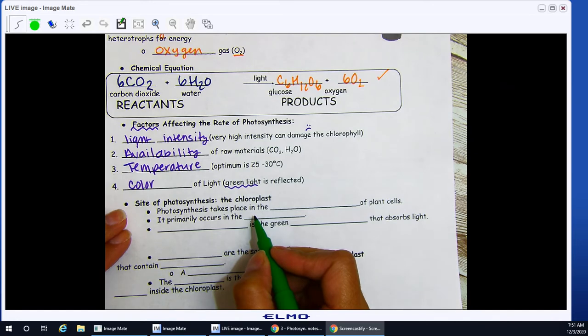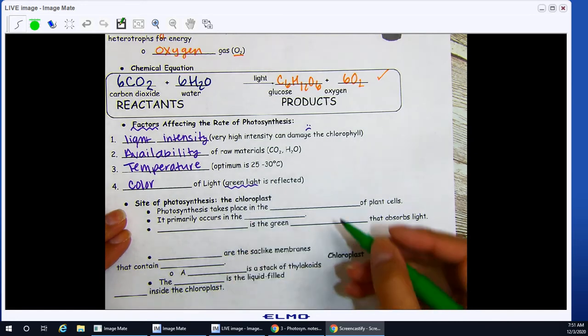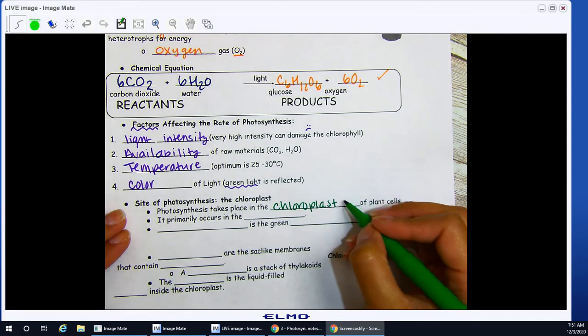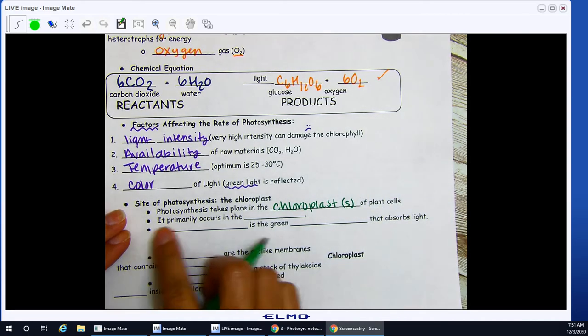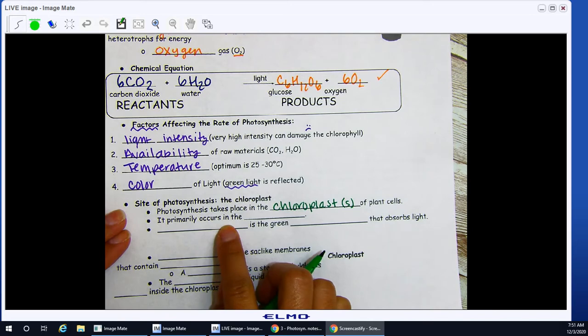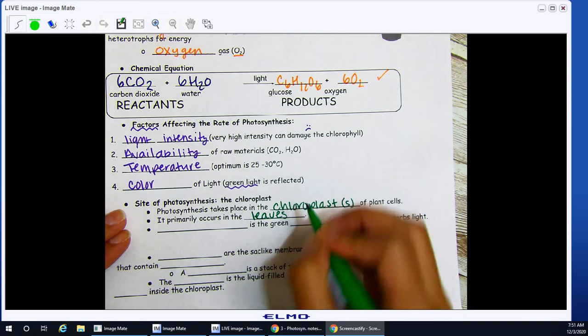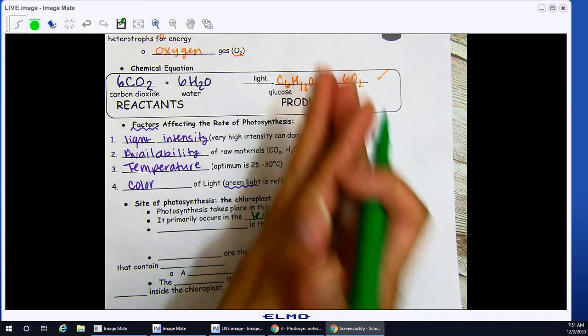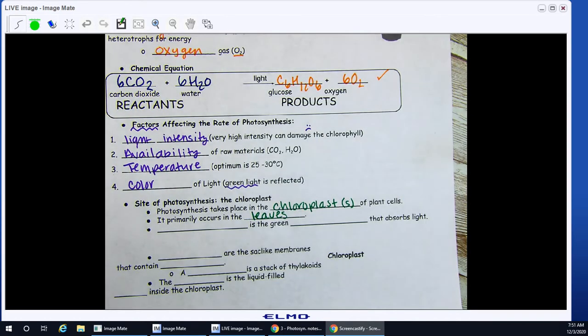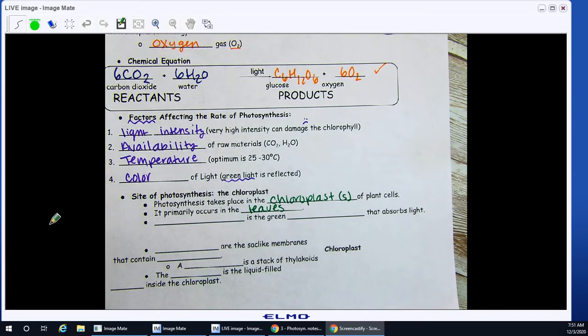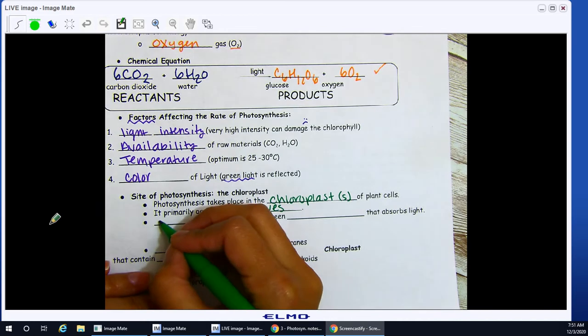Photosynthesis takes place in the chloroplast of plant cells. It primarily occurs in the leaves. Some leaves are very broad, meaning wide and open, to collect more sunlight. So their shape definitely tells you something about their nature. Chlorophyll is the green pigment that absorbs light.